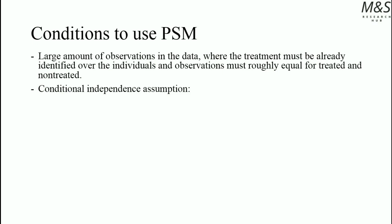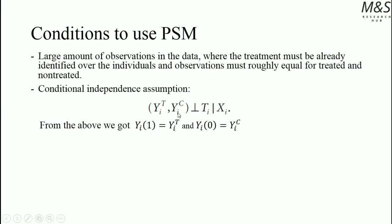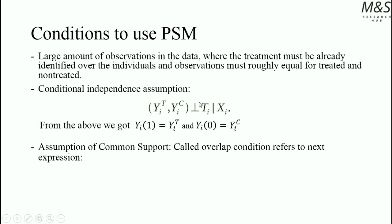The conditional independence assumption is also required. This assumption states that the outcome of individual A when treated and the outcome of individual A from the comparison group when non-treated are independent, given treatment applied to individual A conditional on covariates X. Both outcomes from the treated and the control group are independent given covariates X. This is an important condition for the consistency of the propensity score results.